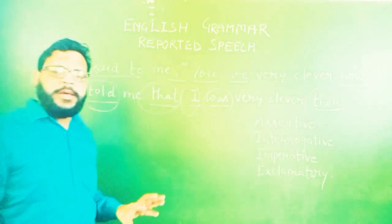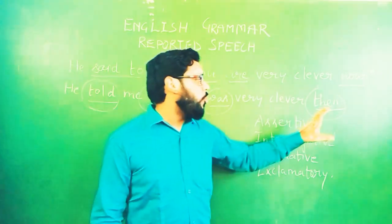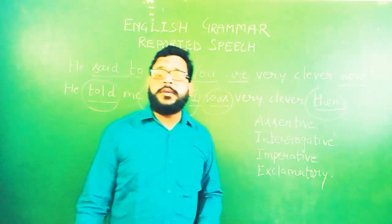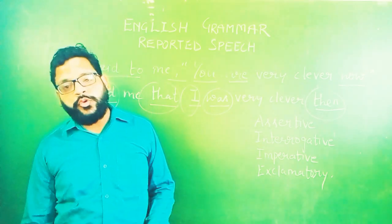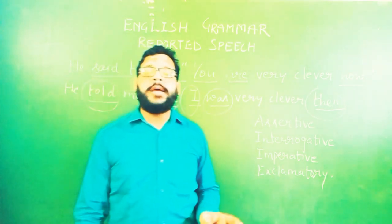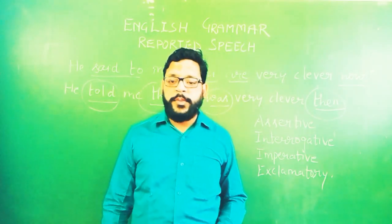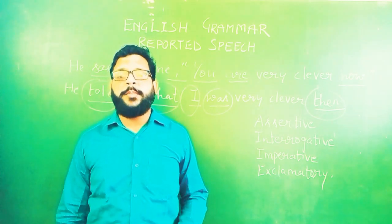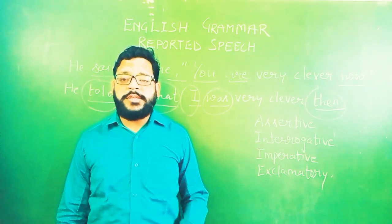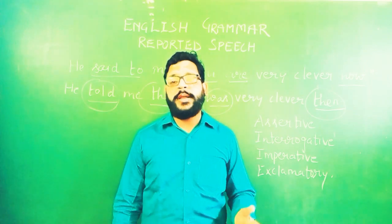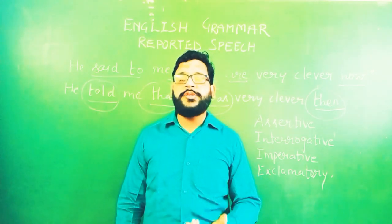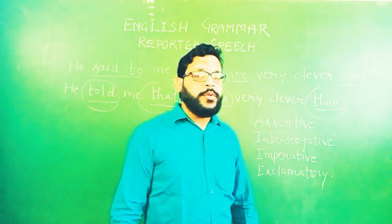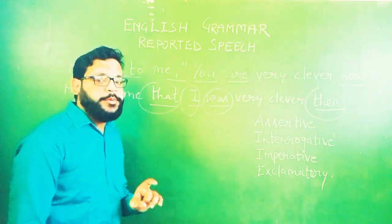There are certain words that change when converting direct to indirect speech. Go through the exercises in your book to learn all these words. For example: 'now' becomes 'then', 'today' becomes 'that day', 'tomorrow' becomes 'the following day', 'hence' becomes 'there', 'come' becomes 'go'. Such types of words that denote nearness and times automatically change when converting direct into indirect speech.